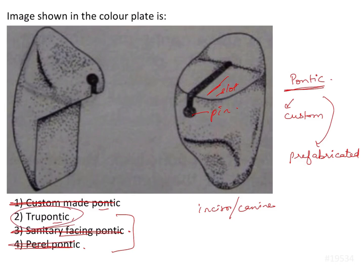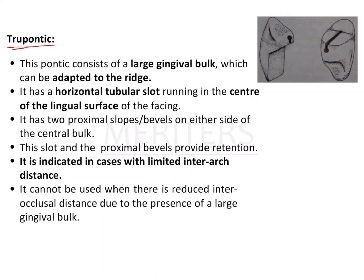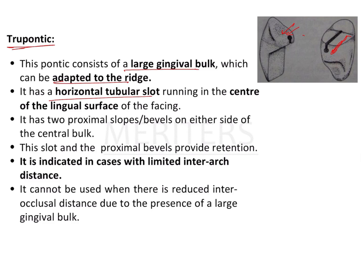The remaining option is true pontic. True pontic has a large gingival bulk, as seen in the image, which can be adapted to the ridge. Since these are prefabricated pontics, modifications must be made accordingly. It has a horizontal tubular slot running in the center of the lingual surface of the facing, and two proximal slopes or bevels on either side of the central bulk.